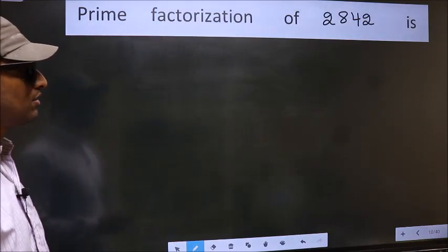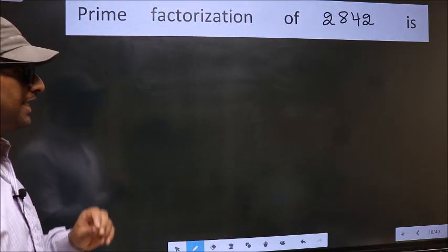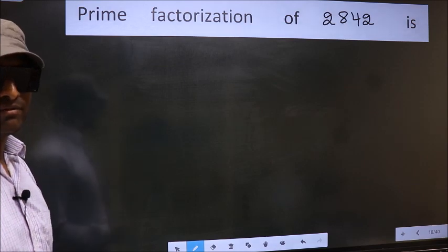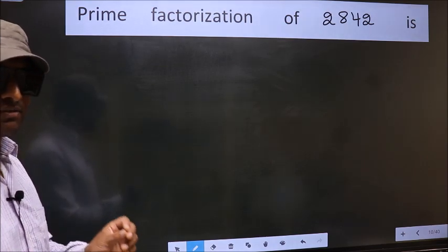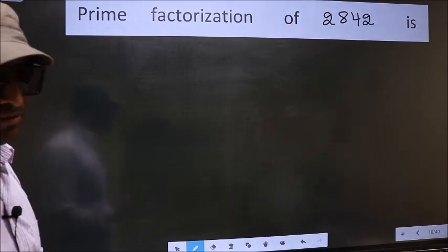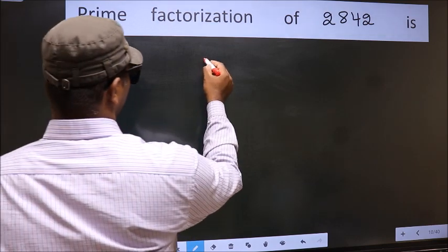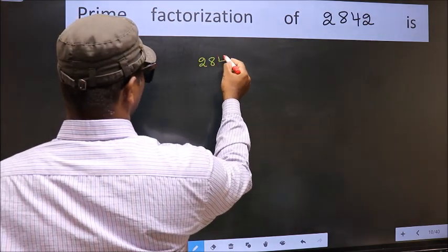Prime factorization of 2842. To do prime factorization, first we should frame it in this way. 2842.